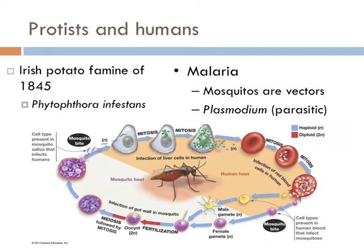Like bacteria, protists can have detrimental effects on human welfare. In 1845 a famine struck Ireland with a vengeance — it was a period of mass starvation, disease, and immigration. During the famine approximately 1 million people died and a million more immigrated from Ireland, causing the island's population to fall between 20 and 25 percent. The cause of the famine was a potato disease commonly known as potato blight.